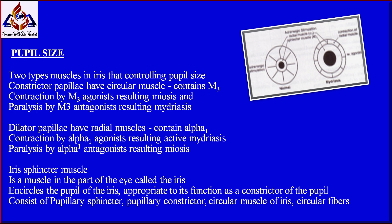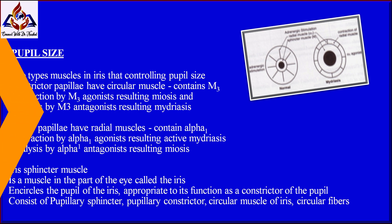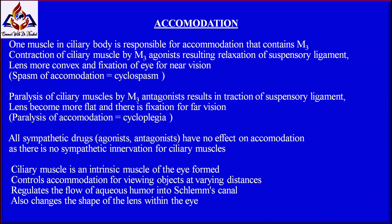The iris sphincter muscles include the pupillary sphincter, pupillary constrictor, and circular muscle of the iris. These circular fibers are the muscles in the part of the eye called the iris, which encircles the pupil, appropriate to its function as a constrictor of the pupil.